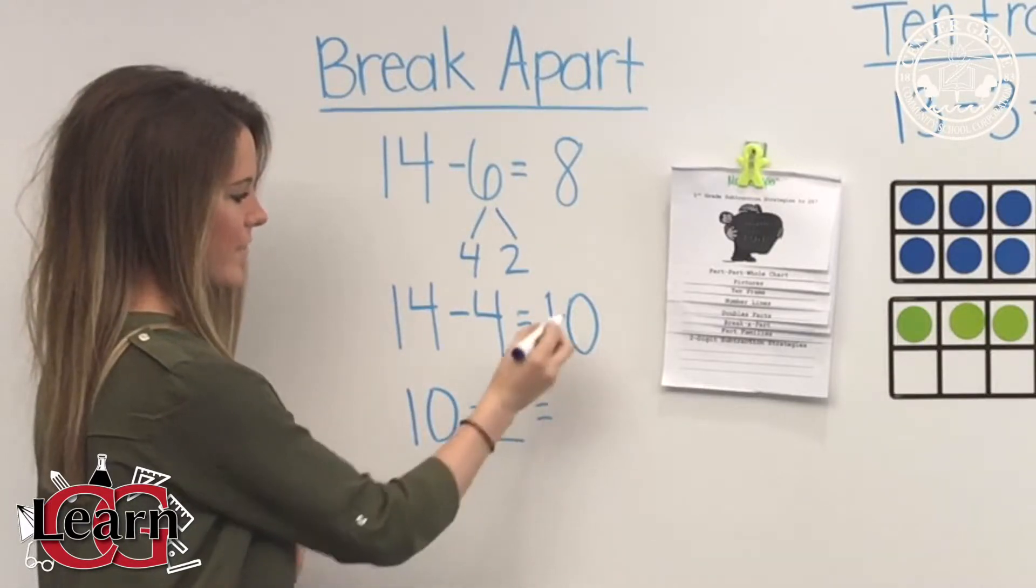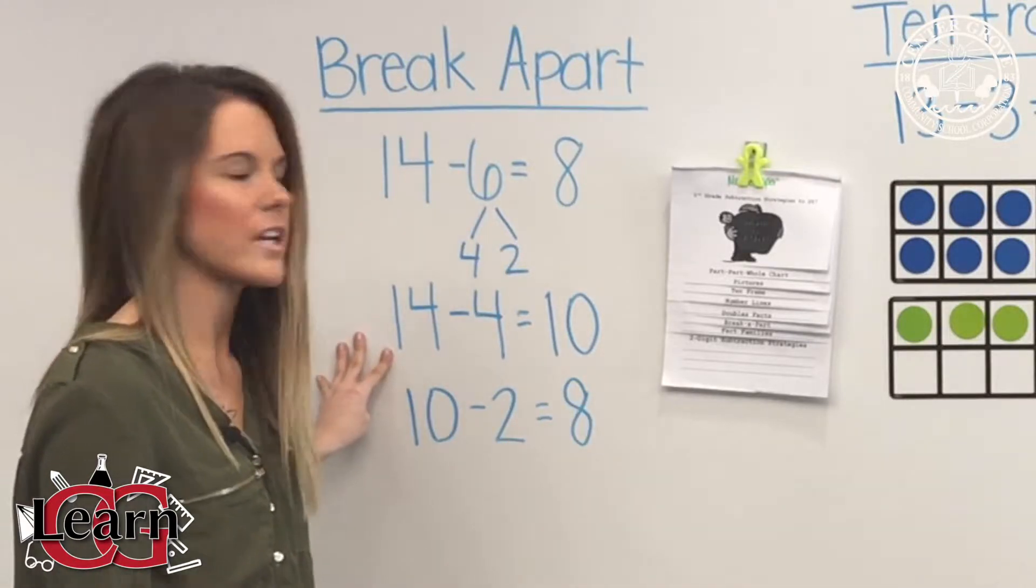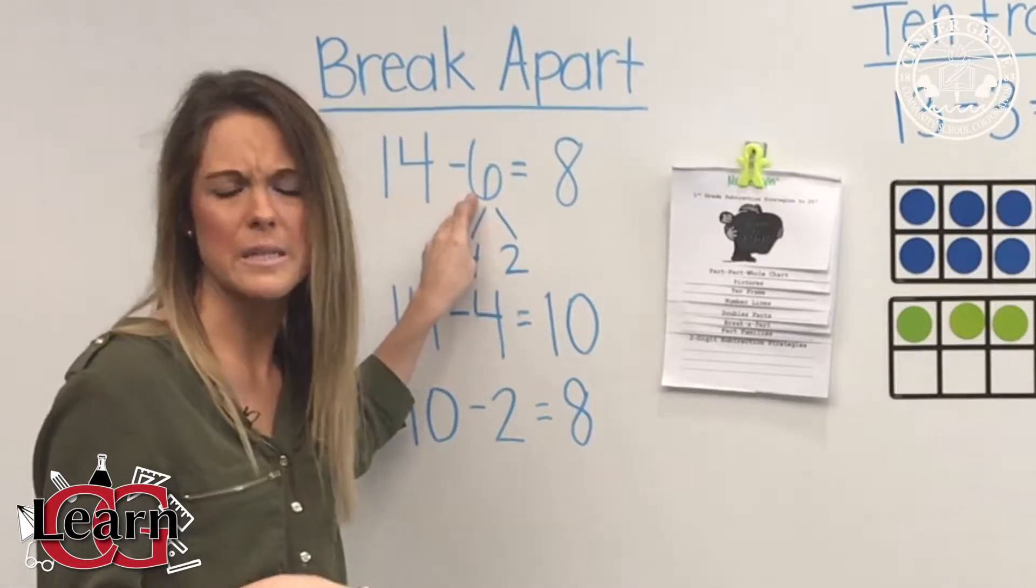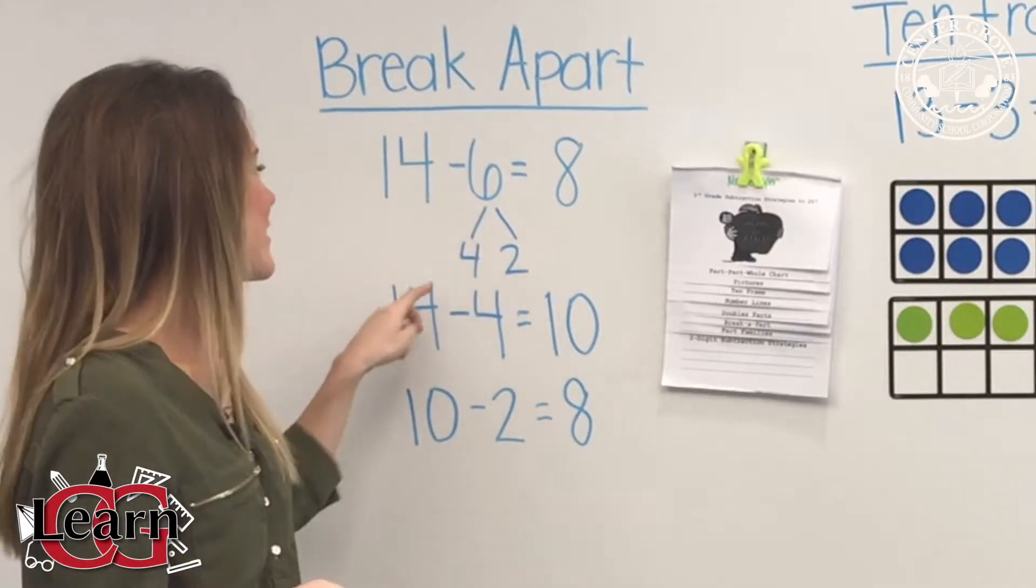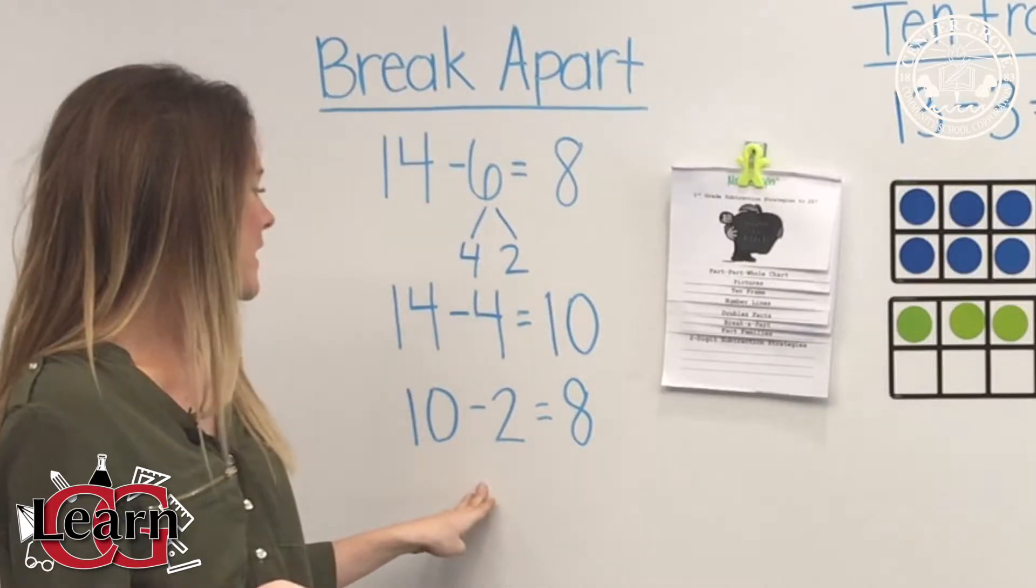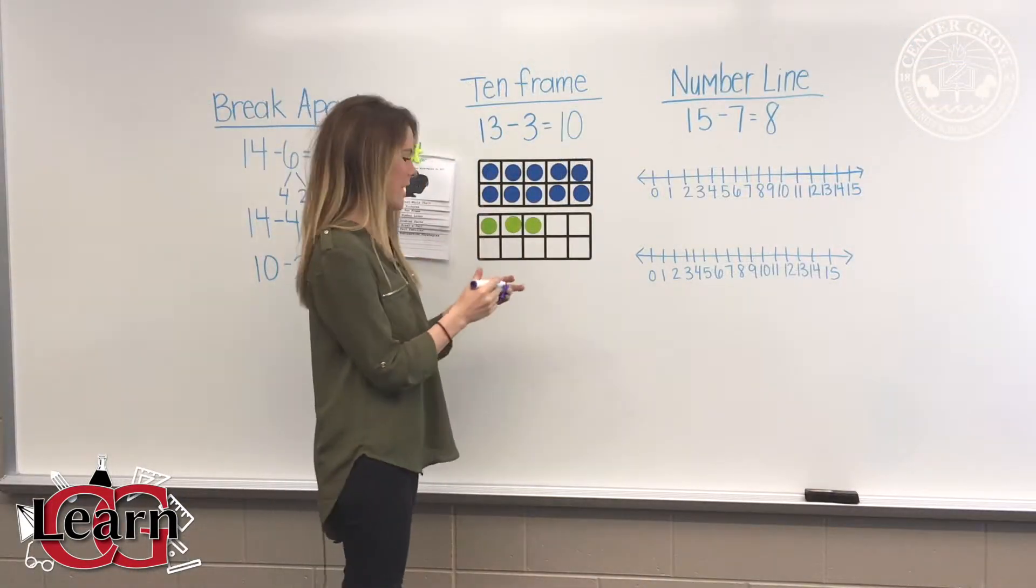We know we still have to use this 2, so we take our 10 and we bring it over here and we subtract our 2, and it equals 8. This is just a little easier for the kids who think, oh well, 6 is a really big number. We don't know it yet. You can go ahead and break it down, and then that's how we can get it easier to equal 8.